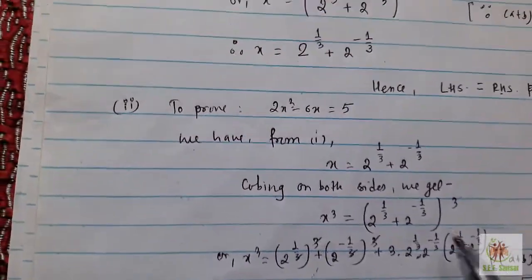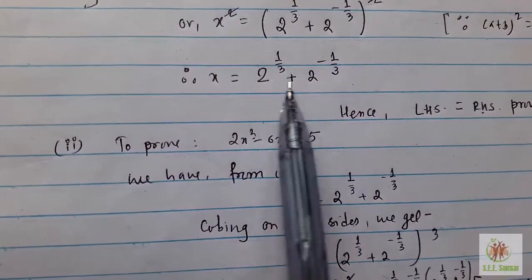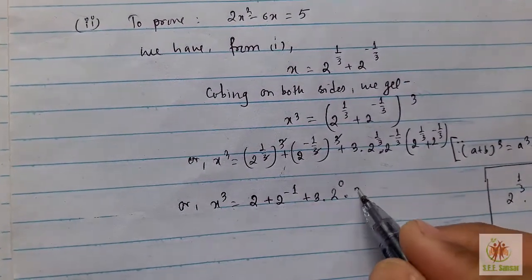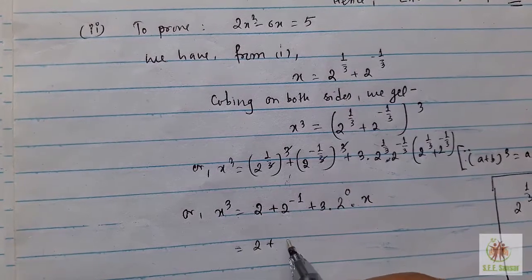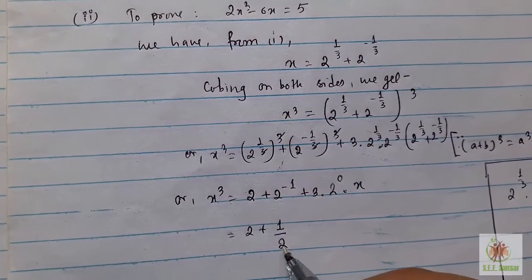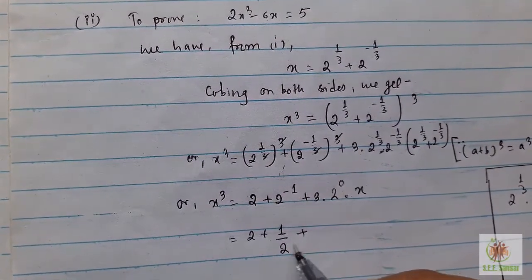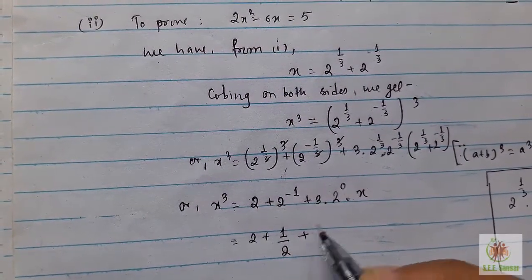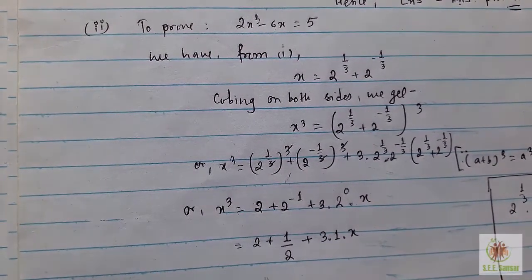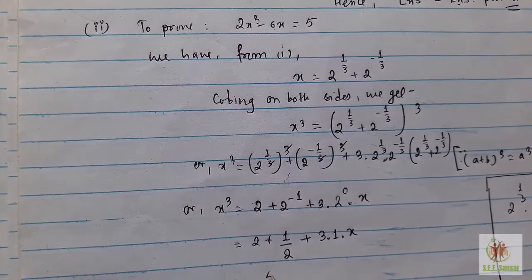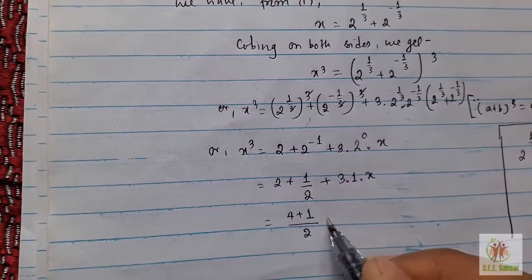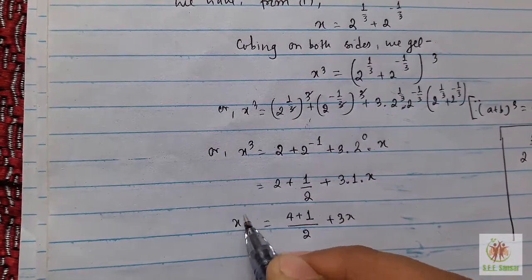Since a + b = 2^(1/3) + 2^(-1/3) = x, we can write x³ = 2 + 2^(-1) + 3x. Taking the LCM of the constant terms: 2 + 1/2 = 5/2, so x³ = 5/2 + 3x.